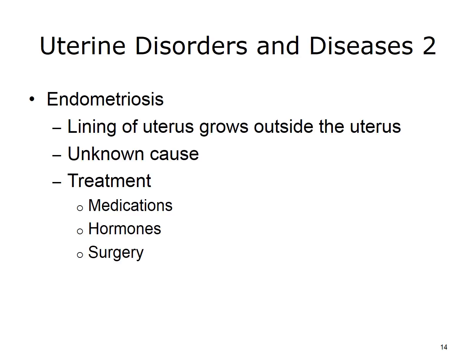Endometriosis occurs when the lining of the uterus grows outside the uterus. The tissue may grow on the ovaries, behind the uterus, or on the bowels or bladder. The tissue outside of the uterus may cause pain, infertility, and excessive bleeding during the menstrual cycle. The cause of endometriosis is not known. Treatment includes pain medications, hormones, and sometimes surgery.